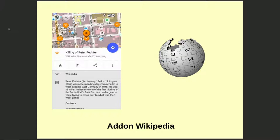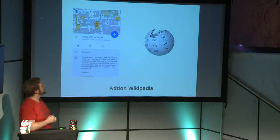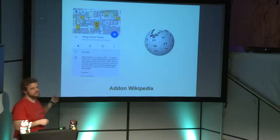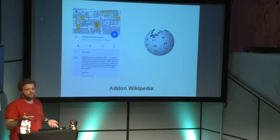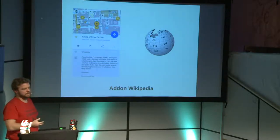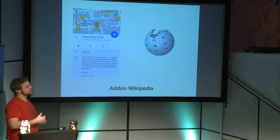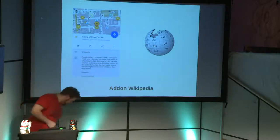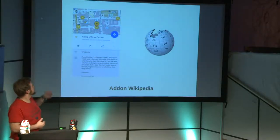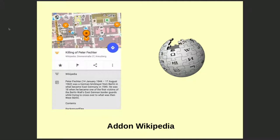One add-on I want to highlight: the Wikipedia add-on. You can download it, and it shows every Wikipedia article that has a GPS location right on your map, including the full text offline. When I travel and spend a few days discovering a city, I basically have a personal tourist guide in my pocket. You can look up that interesting church or monument, or even historical markers like where someone was a victim of the Berlin Wall border control.